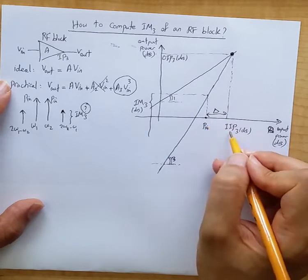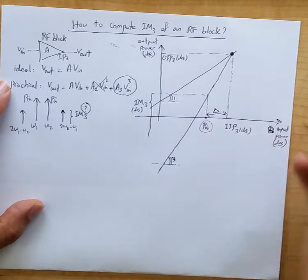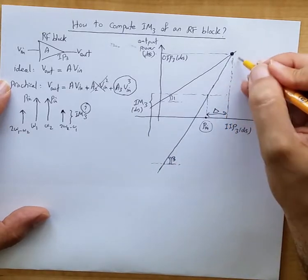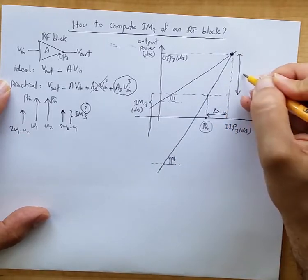Now you're delta backed off from the IIP3 point. You're applying PN, and because the tangent is 3, this here would be 3 delta.